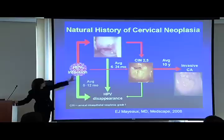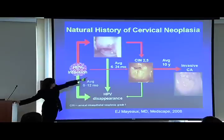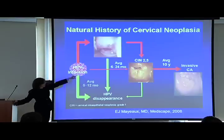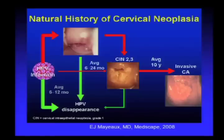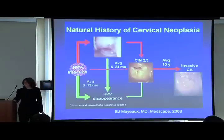Some HPV infections persist for six to 24 months and may develop into so-called precancerous or high-grade lesions. Those, if untreated, can develop into invasive cancer over an average of 10 years. However, even high-grade lesions can still clear—they have about a 30% chance of returning to normal, a 30% chance of progressing to cancer, and 30–40% chance of staying the same.